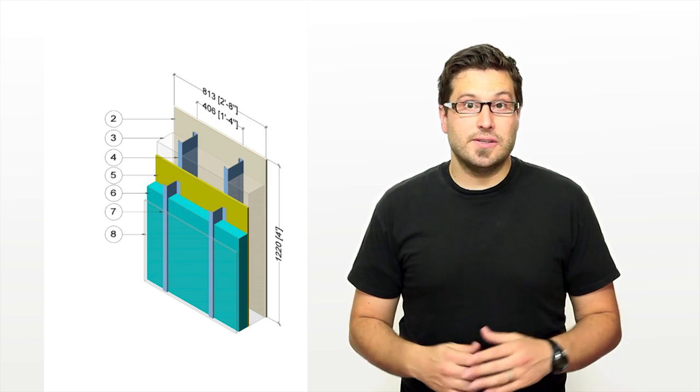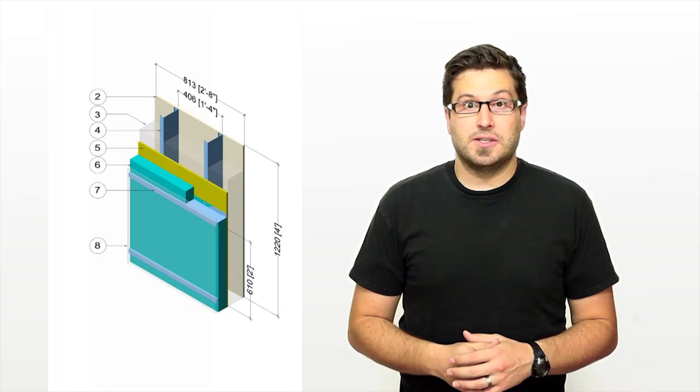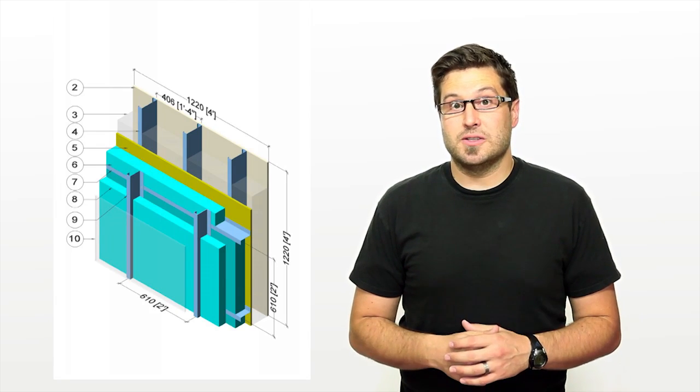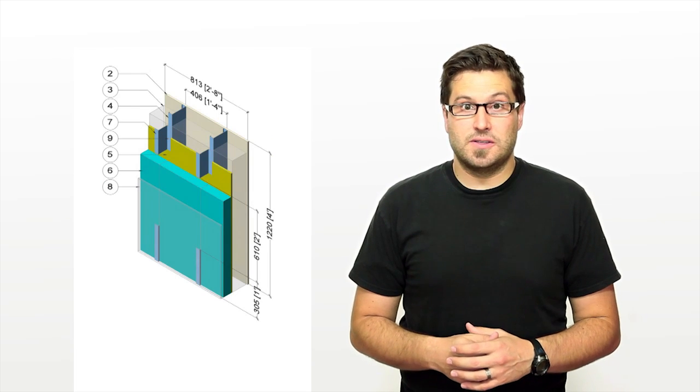In addition to vertical Z-girts, they modeled horizontal Z-girts, vertical and horizontal Z-girts, and intermittent Z-girts. When we were doing this modeling, we found that with one of the common systems, the vertical Z-girts, heat transfer was about twice as much as some of the better systems we tested.